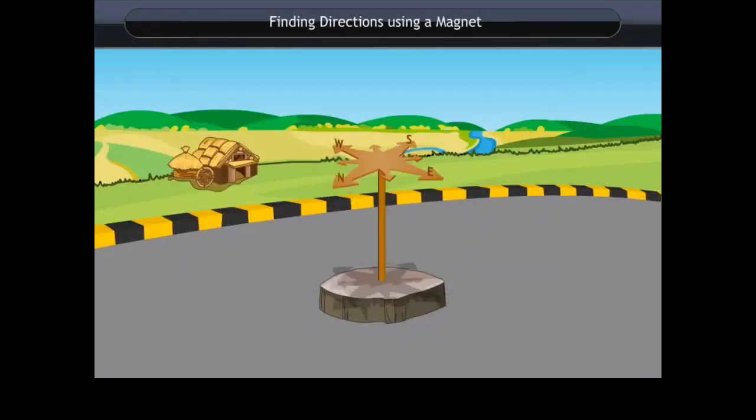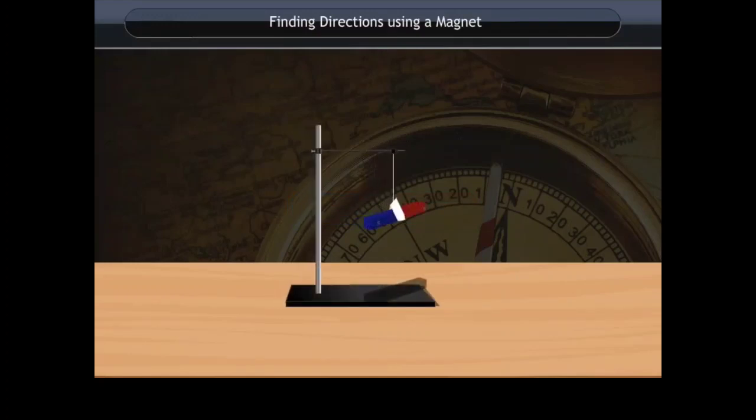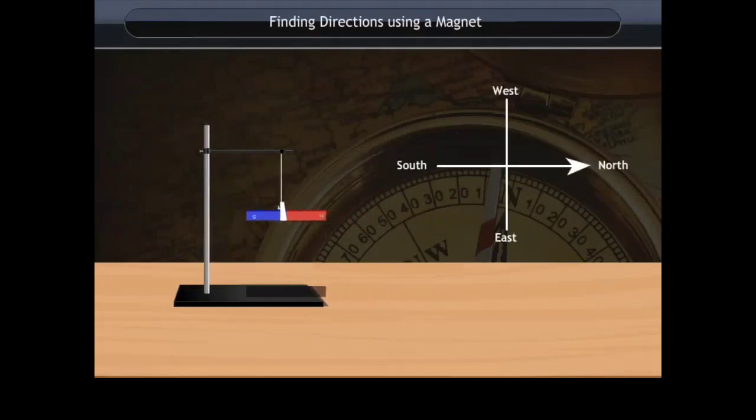Finding directions using a magnet: Magnets have been used since ancient times to find directions. Let us learn how to find directions using magnets. Take a bar magnet having labels of north and south poles. Take a thread and tie it in the middle of the magnet. Now suspend it freely from a stand. You will find that the magnet rests in that particular direction only as shown in the figure.